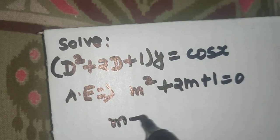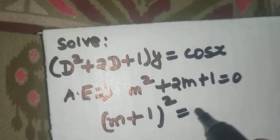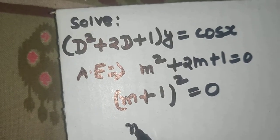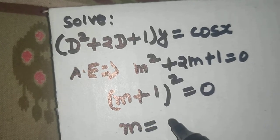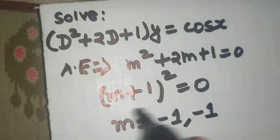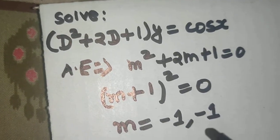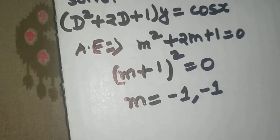This is nothing but m plus 1 whole square equals to 0. So you are getting m as minus 1 and minus 1 because you can write this as m plus 1 into m plus 1 equals to 0. So you are getting m as repeated minus 1 and minus 1.